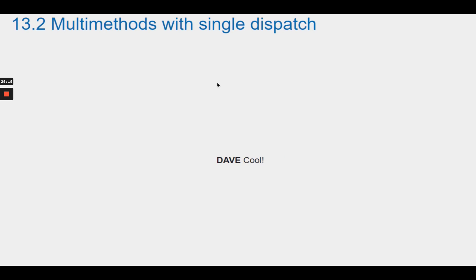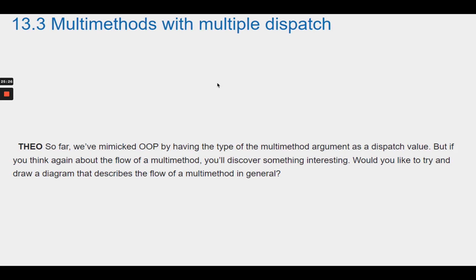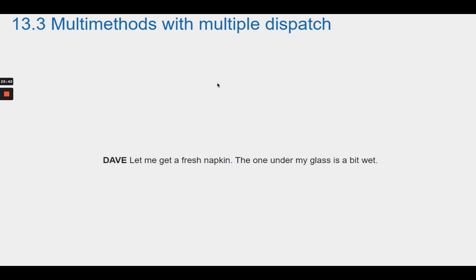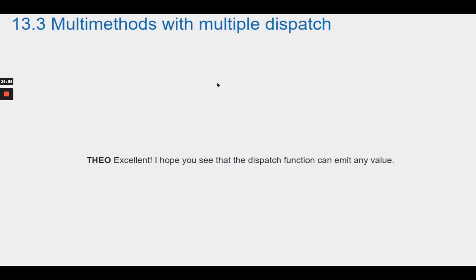Section 13.3: Multi-Methods with Multiple Dispatch. So far, they've mimicked OOP by using the type of the argument as the dispatch value. But the dispatch function can emit any value. Theo says: imagine the animals are polyglot — polyglot comes from Greek polis (much) and glossa (language), meaning a person who speaks many languages. The animals could speak English and French, illustrating that a dispatch function can emit a value based on more than one argument.